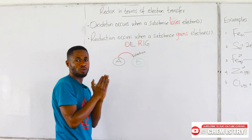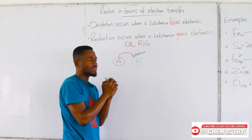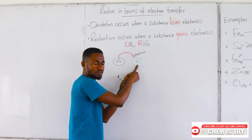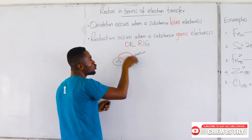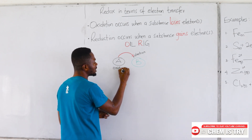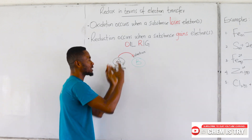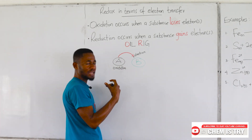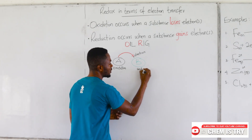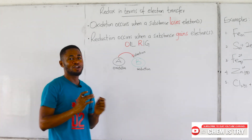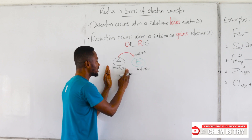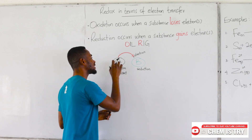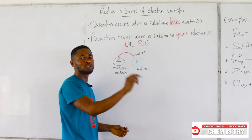Now here we have two substances involved — substance A and substance B. Substance A loses one or more of its electrons to substance B. So substance A, which is losing the electron, is undergoing oxidation because it is losing electrons. Oxidation is loss. So we can say that substance A has been oxidized.